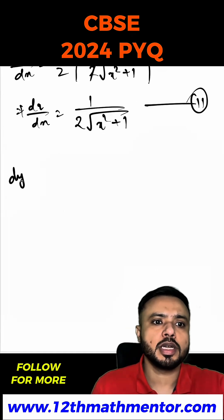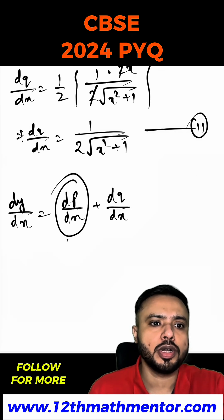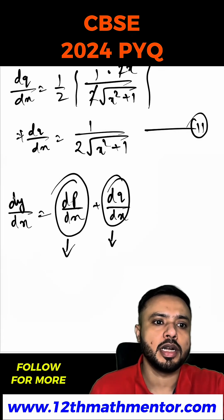Hence for dy/dx we will write dp/dx plus dq/dx. I will substitute the dp/dx value here and the dq/dx value here. And we will get our dy/dx.